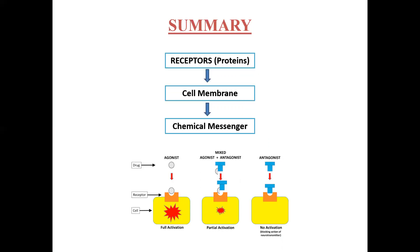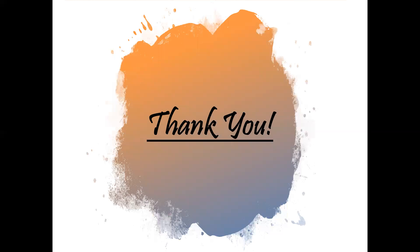When the chemical messenger binds, chemical changes occur. Drugs can be used to influence these chemical messengers. The three types are: agonist — receptor binds and activation is increased; antagonist — receptor binds and activation is blocked; and mixed agonist-antagonist — results in partial activation. Thank you for watching.